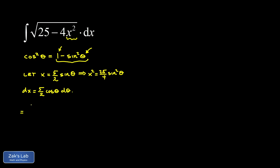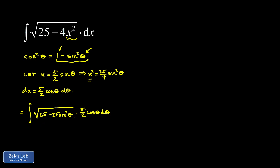So our original integral is equal to the square root of 25 minus 4 times x squared, which is 25 fourths sine squared theta. When we substitute that in, the 4s cancel and we have 25 minus 25 sine squared theta. Then our dx is 5 halves cosine theta d theta. We can factor a 25 out of the square root, giving a 5 outside the square root.